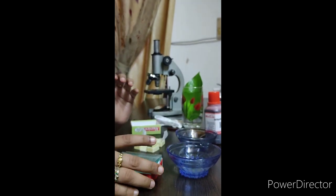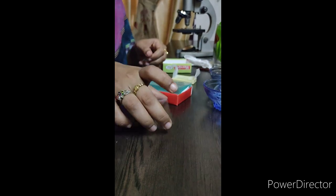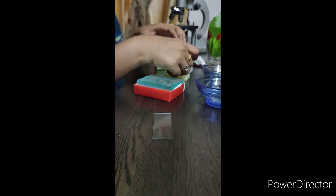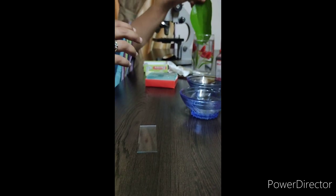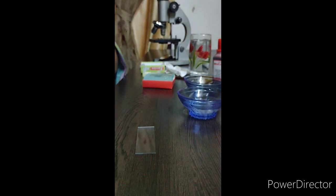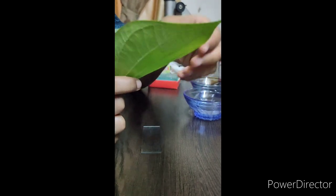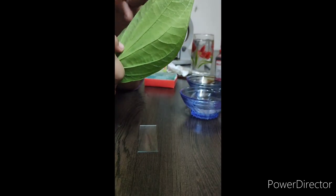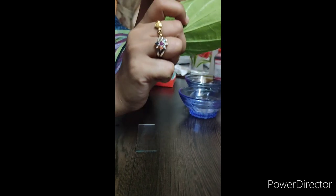So, we will now proceed to the preparation of the slide. I have taken the glass slide there. Now, to get the epidermis. The stomata, since we are viewing the stomata, stomatas are mostly found on the lower part of the leaf.